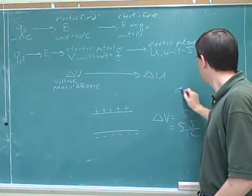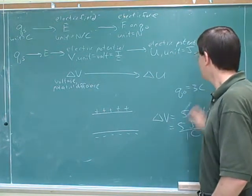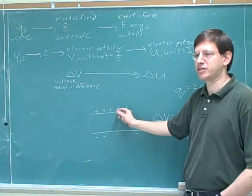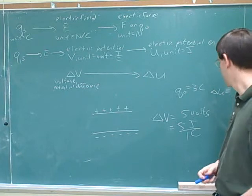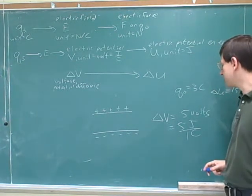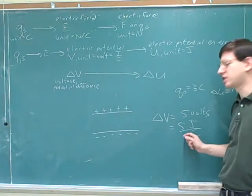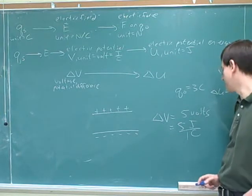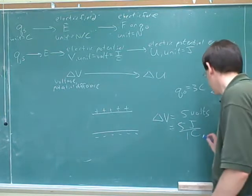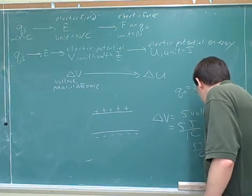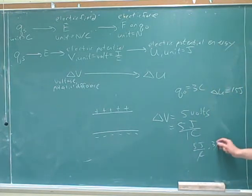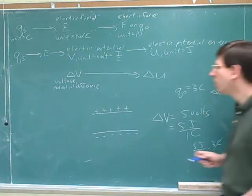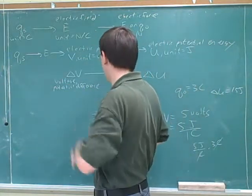By the way, suppose that we move a three-coulomb charge between these plates. What would its energy change be? 15? Yeah. So even though this only tells us directly about the energy change for one-coulomb charge, it's still very useful for any amount of test charge. We can just do some unit manipulation to figure out this would be 15 joules, or we can use the formula we saw last time.